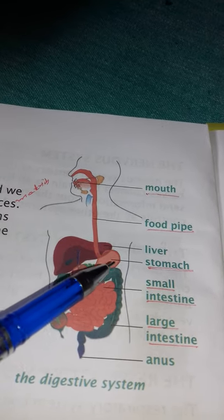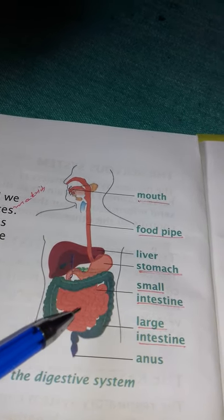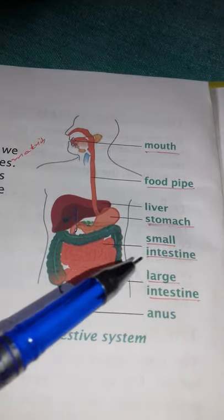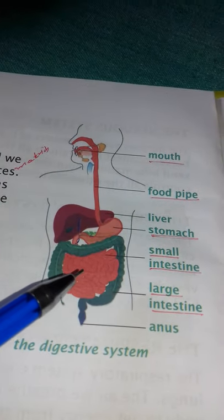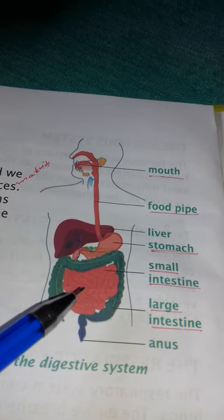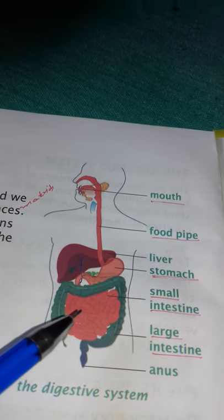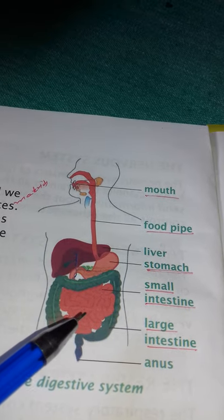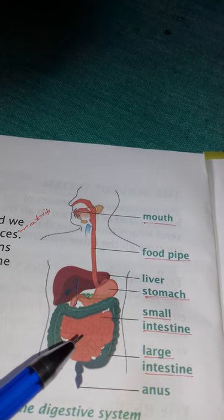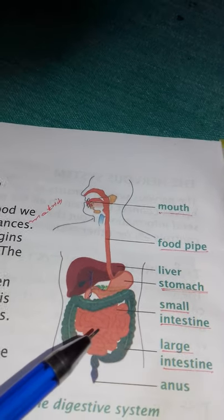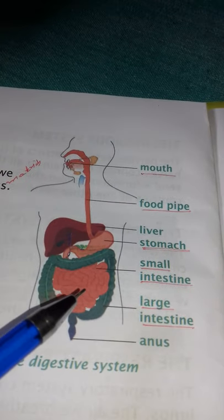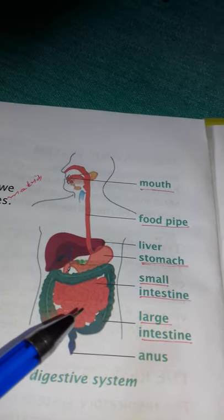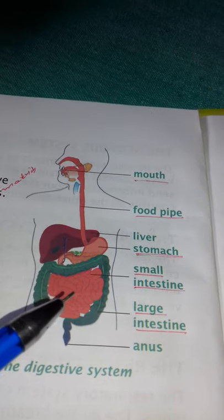The undigested food then comes to the small intestine. Here in the small intestine, the food is broken down fully into simple substances — the food is totally digested here. But you should remember that all food is not digested; some parts of the food remain undigested.